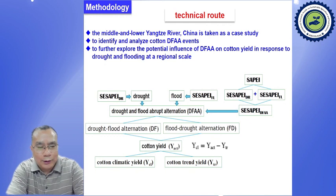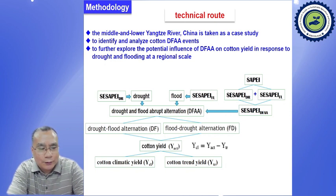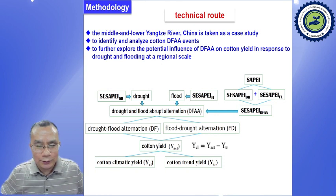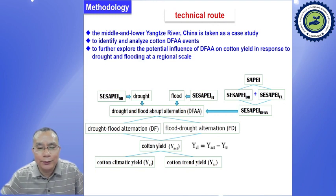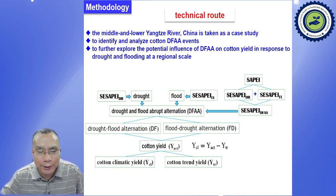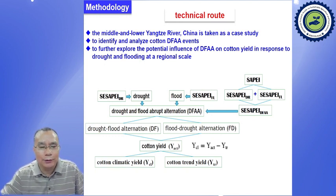Cotton yield includes two parts. The first part is the trend change, and the other part is the change caused by climate change. We calculate cotton climate yield through the difference of the actual observed cotton yield — that means the total cotton yield minus the trend yield — to obtain the cotton calamity yield.